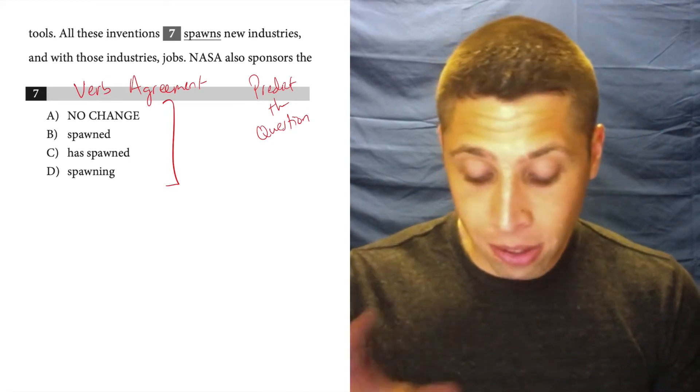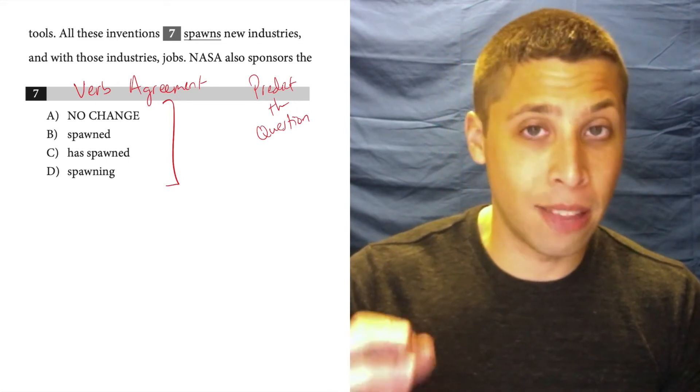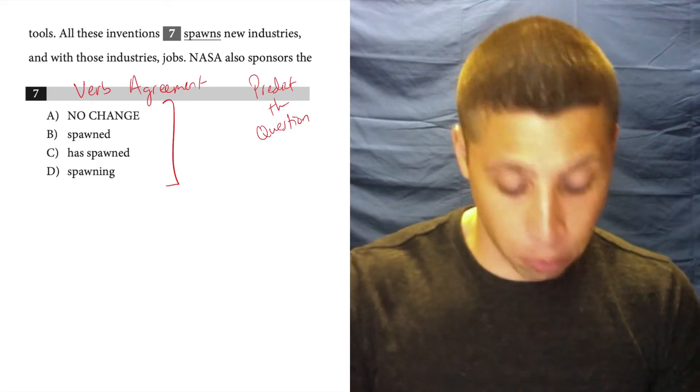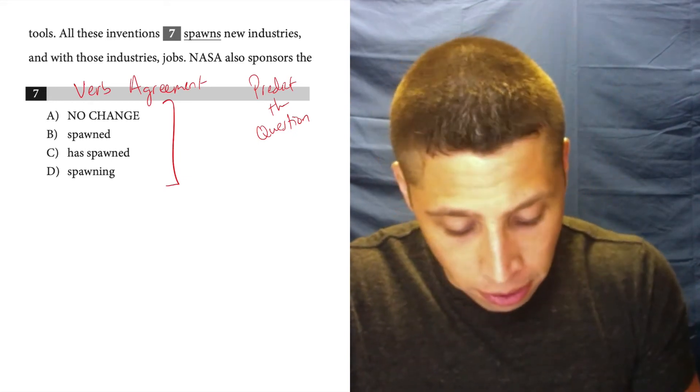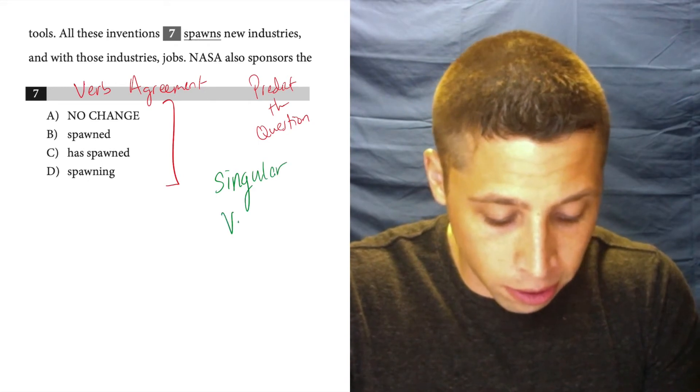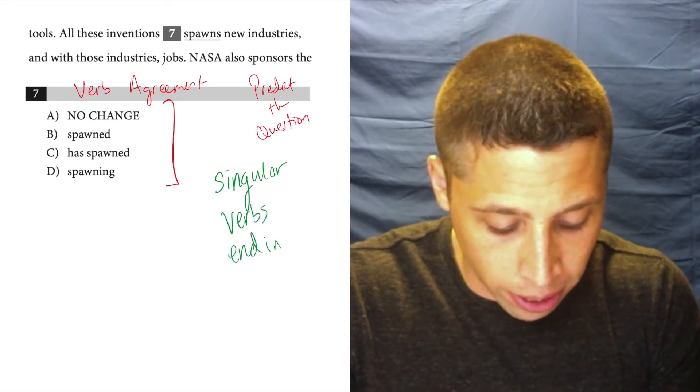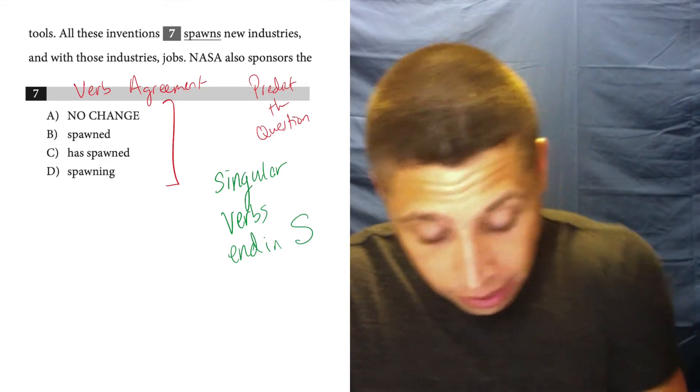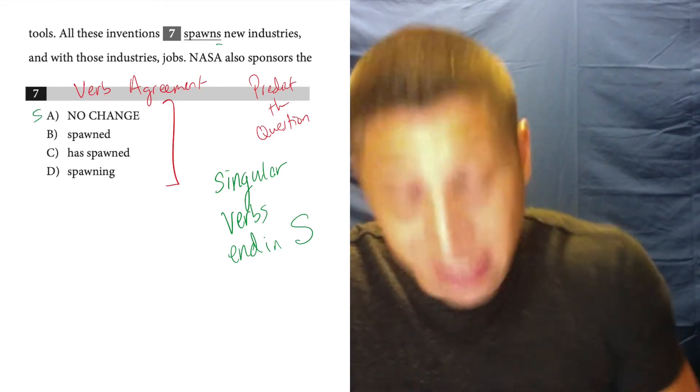So what you might want to do is start the process by looking at the verbs in the choices and just labeling them. Are they singular or are they plural? And remember, generally speaking, singular verbs end in S. So choice A is singular because spawns ends in S.